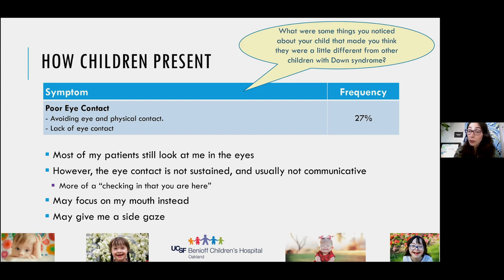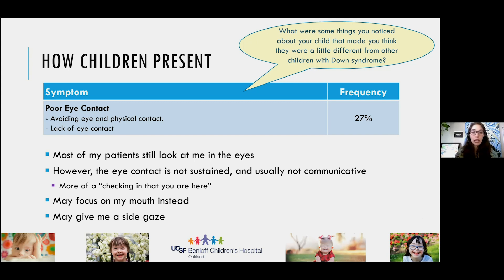Poor eye contact was also reported by families. This is another one where it's easy to get fooled. A lot of my patients with a dual diagnosis will look at me in the eye briefly, but the eye contact is often not sustained and usually not communicative in the way that my kids with Down syndrome without autism use their gaze to help communicate. Many will focus on my mouth instead of my eyes, or give me a little side gaze.